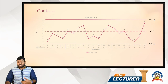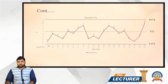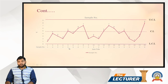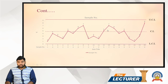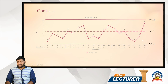UCL is 10, central line CL is 4, and LCL is 0. Checking each sample: defect counts are 1, 4, 3, 5, 4, 6, 7, 8 for samples 1 through 9; sample 10 is 3, sample 11 is 2, sample 13 is 7, sample 14 is 6, sample 15 is 4, sample 16 is 5, sample 17 is 2, sample 18 is 1, sample 19 is 3, and sample 20 is 8.